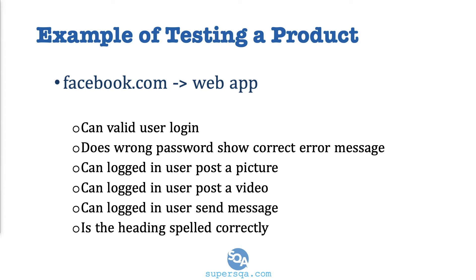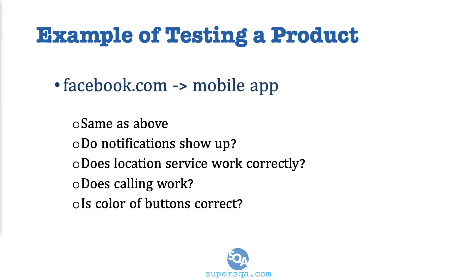We're also going to discuss those in more detail. And you can imagine, if you think about the whole application — the whole Facebook — you can have thousands and thousands of tests. These are just very basic examples to give you an idea what it means when we are actually testing a software. Now let's look at the mobile app version of Facebook. When we are testing the mobile app, all of the things we just tested before are still valid — same as above.